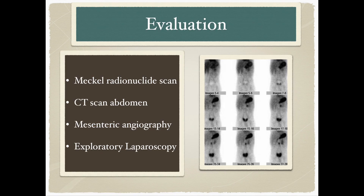The most sensitive test to diagnose Meckel's diverticulum is a radionuclide scan, done by injecting Technetium-99m, which is absorbed by gastric mucosa, allowing visualization of the diverticulum. We can also do a CT scan. If there is bleeding of more than 0.5 ml per minute, nuclear angiography can be done, and if there is a diagnostic dilemma, we can perform diagnostic laparoscopy.